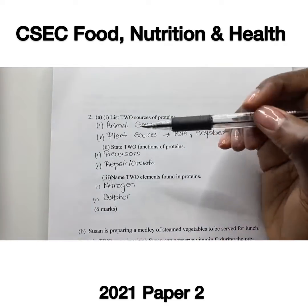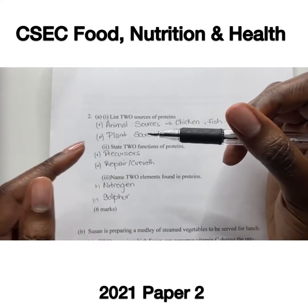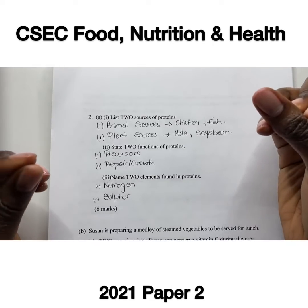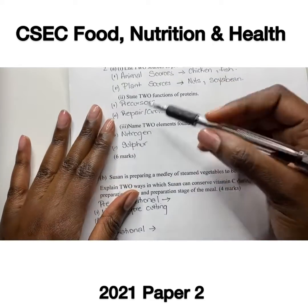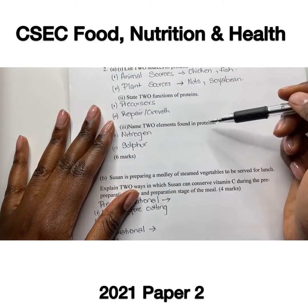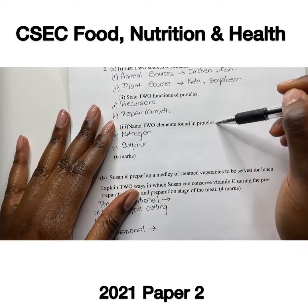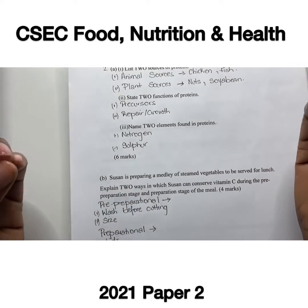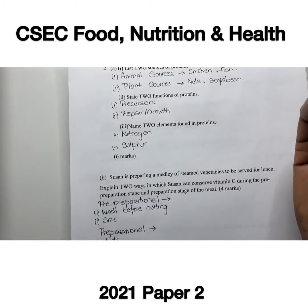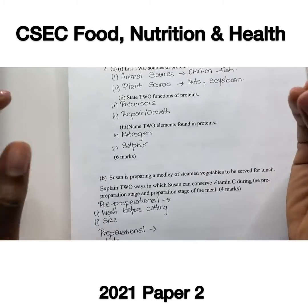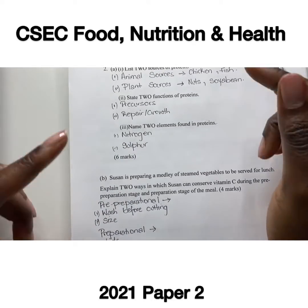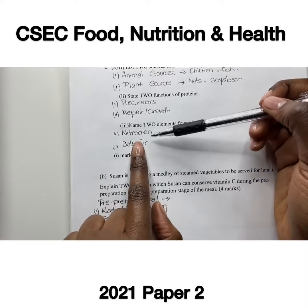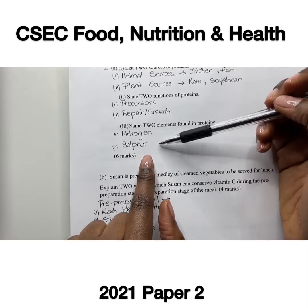We also need proteins for the growth and repair of our cells and tissues. Part three asks to name two elements found in proteins. All macromolecules consist of carbon, hydrogen, and oxygen, but two unique elements found in proteins include nitrogen and sulfur.